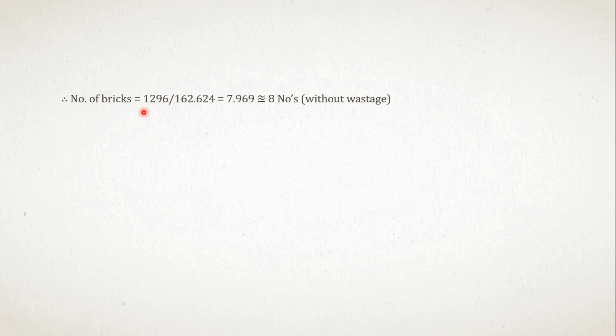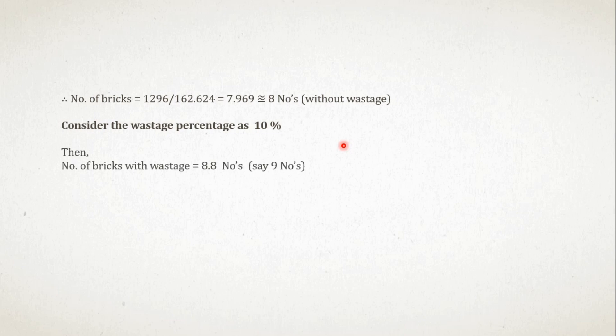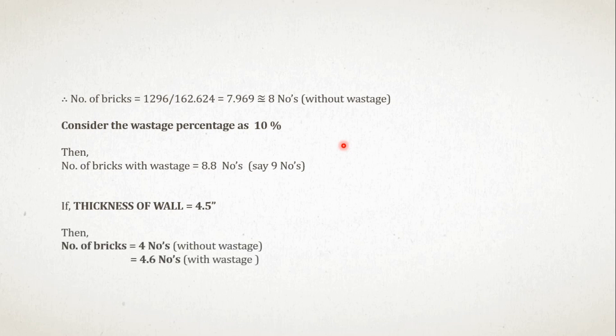These 8 numbers are without wastage. Considering the wastage percentage as 10%, the number of bricks with wastage in one square foot equals 8.8, say 9 numbers. If the thickness of wall is 4.5 inch, then the number of bricks equals 4, and the number of bricks required in one square foot with wastage equals 4.6 numbers.